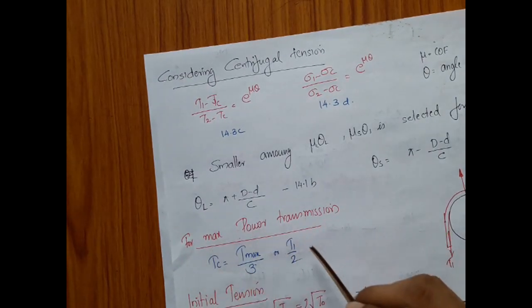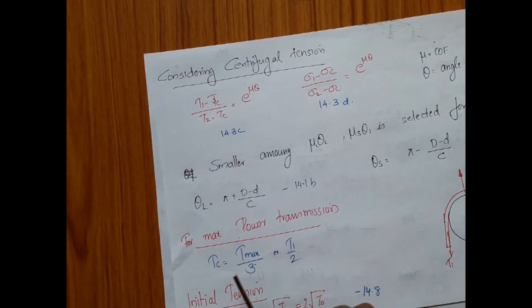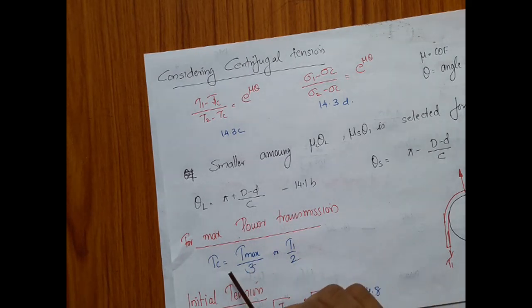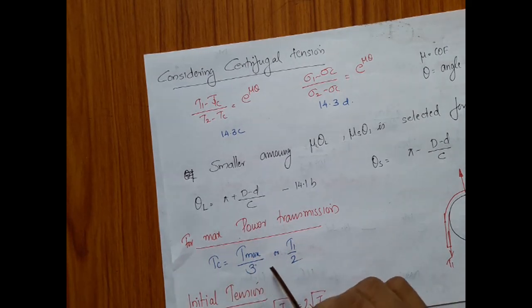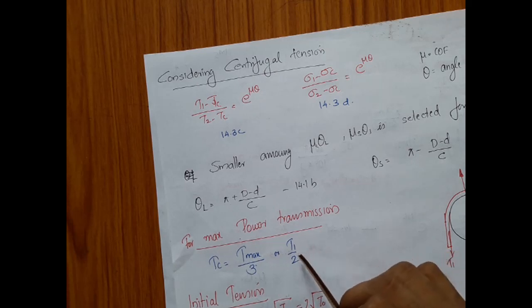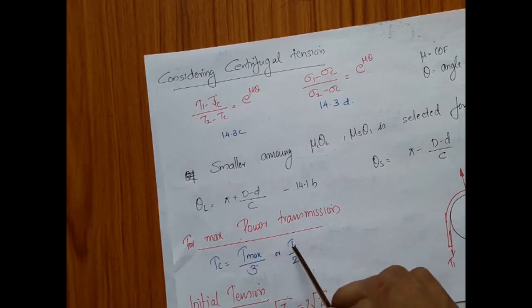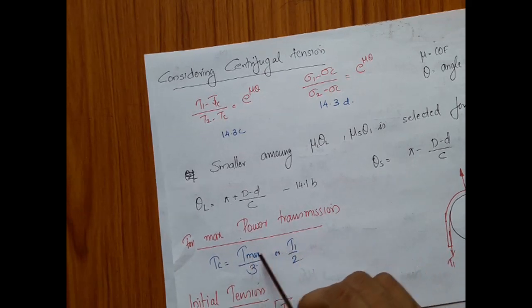Just for your information, there is a condition for maximum power transmission. This is not that important for the design, but the condition is Tc equals T_max divided by 3, or equivalently T1 divided by 2. Please do not confuse T_max with T1 — they may not be the same.